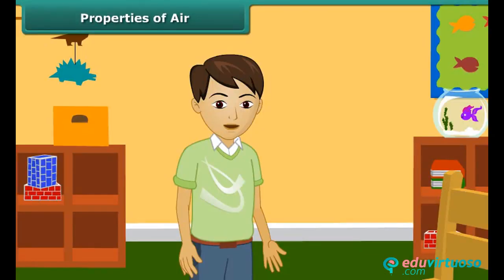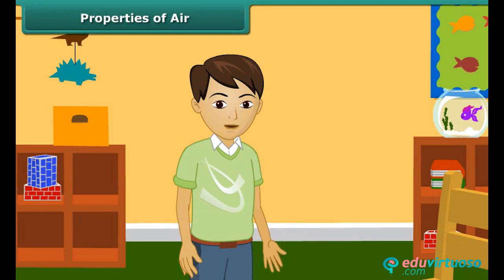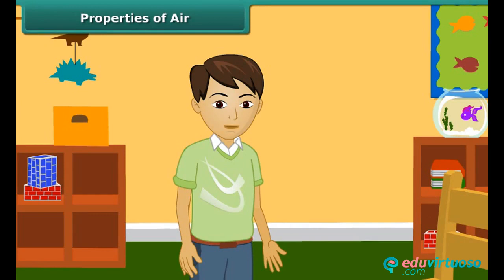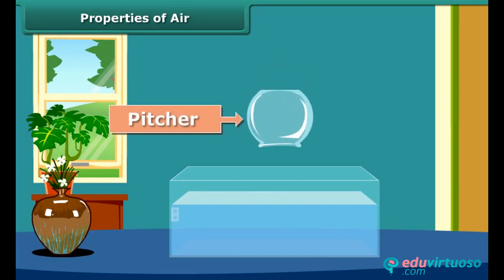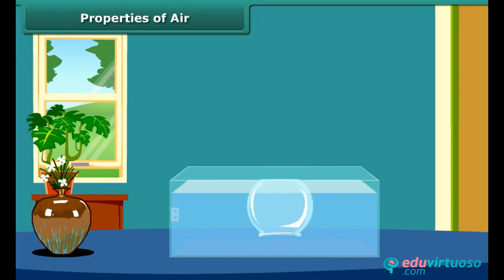Air is colorless and enables us to see everything through it as it is. It has no smell and taste. Air occupies space. To understand this, take a pitcher and dip it straight into the water. No water enters into the pitcher.